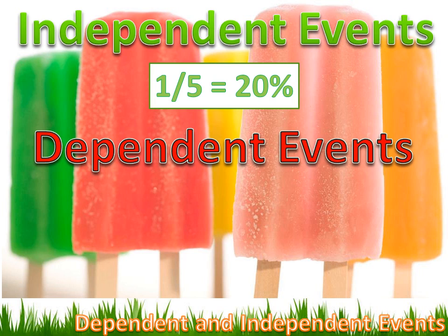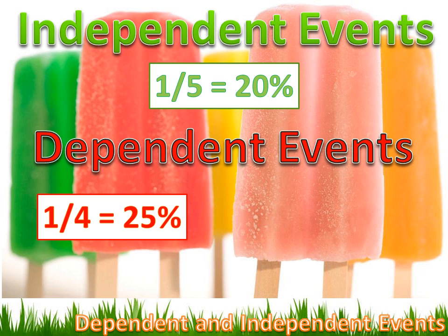Now let's look at dependent events. Again, your father picks a popsicle for me first, then picks one for you — but this time he's not going to replace the color he gave me, so there'll be one fewer potential outcome. For instance, if he picks red for me and you still want green, you've got a one in four chance of getting green, because I took out one of the potential outcomes. Your probability would be 25%.